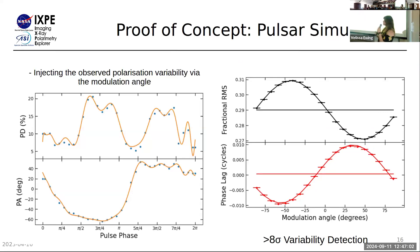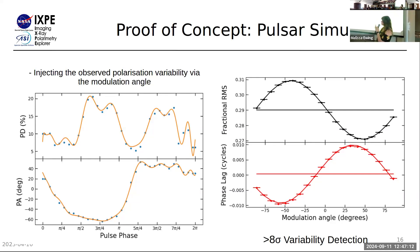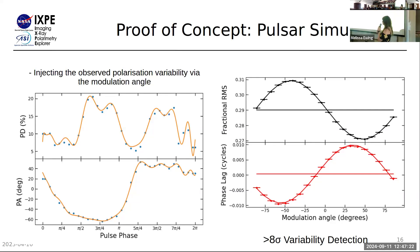I've further consolidated the methods by running simulations where I can inject any type of polarization variability I like. I re-injected the true polarization variability that's present in the pulsars and tested our RMS-phase method, and once again we recover the expected 180-degree modulation.